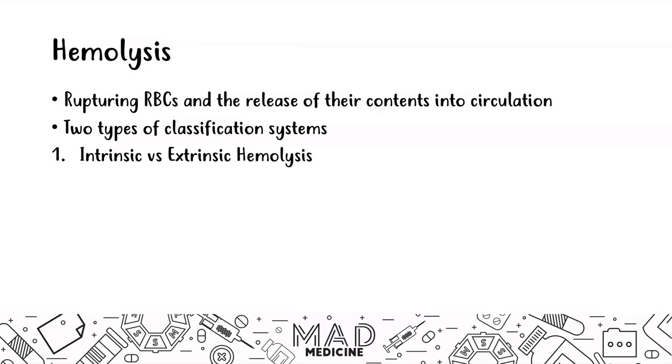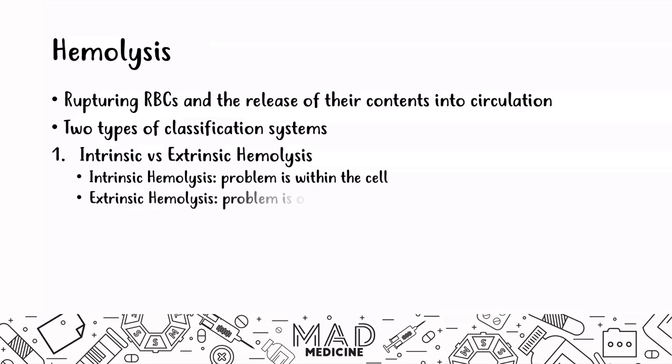In this classification, intrinsic hemolysis refers to problems within the cell that lead to the cell lysing and bursting. Then you have extrinsic hemolysis, which involves problems on the outside of the cell — issues occurring in the blood vessels and organs. Anything outside of the cell that leads to hemolysis, including viruses and other causes, falls under extrinsic hemolysis. That is the first type of classification.